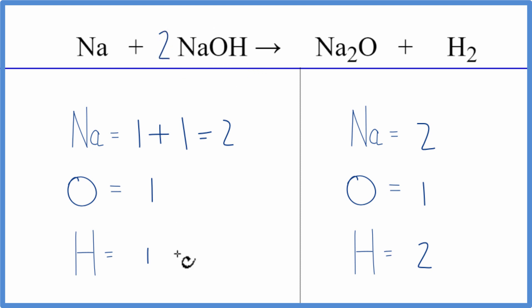One oxygen times 2, we have two oxygen atoms. And then let's update the sodium. So we have our one sodium here plus our one times 2, so that gives us three sodium atoms.